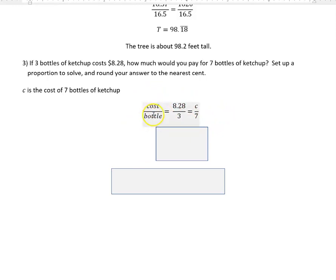If you were to invert this and put bottle over cost, you get the same answer, but you have to be consistent. Cost has to go all the way across, bottle has to go all the way across.